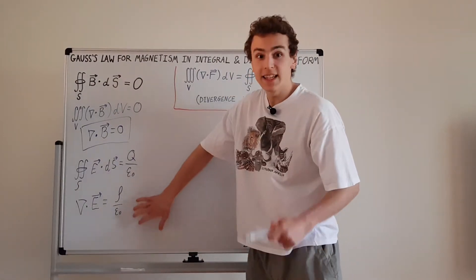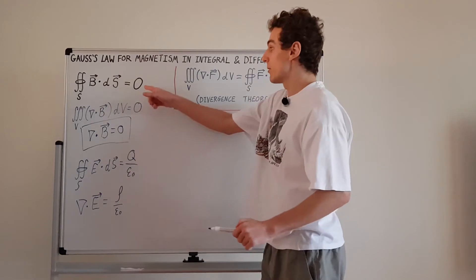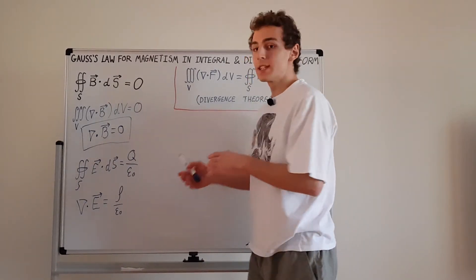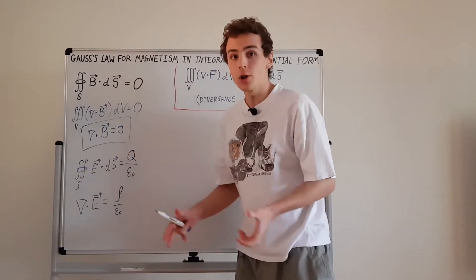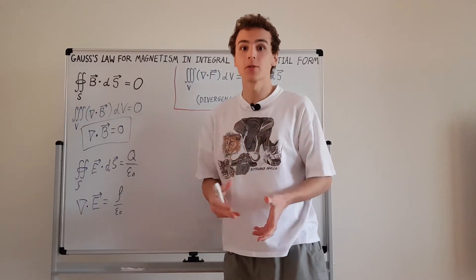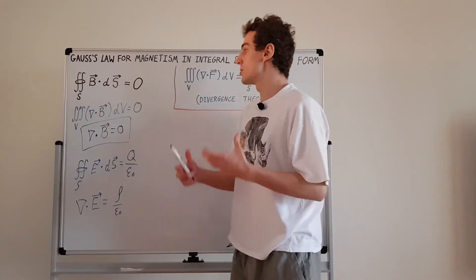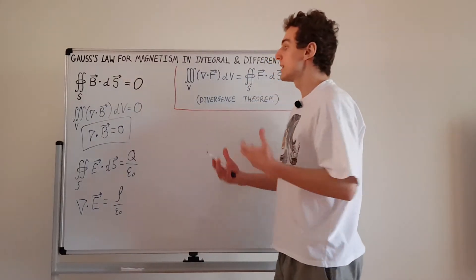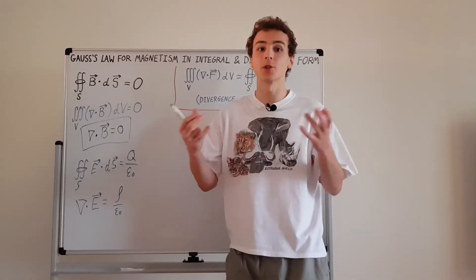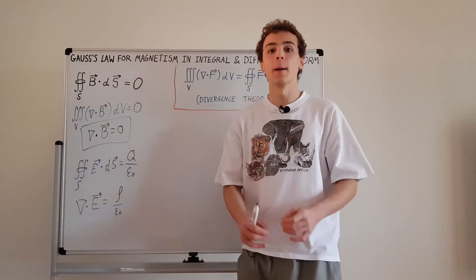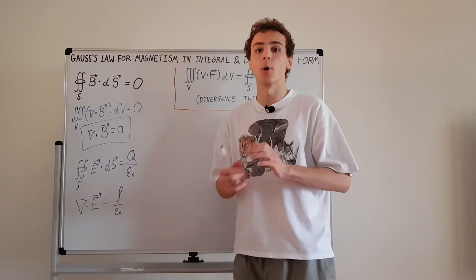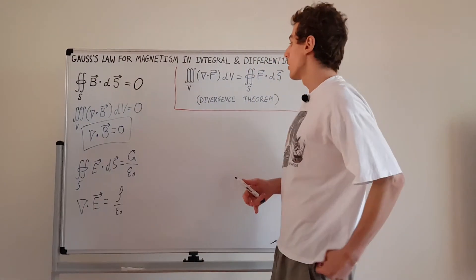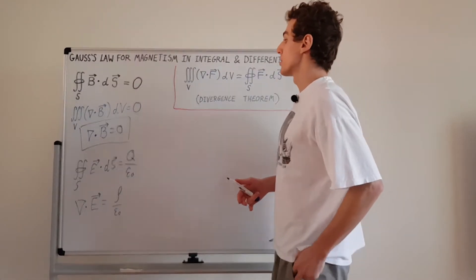For the magnetic field, the divergence is always equal to zero — not charge density over a constant. This is saying there are charges for electric fields, but there's no equivalent in magnetism. Magnetism doesn't have any sort of magnetic charge. In other words, there's no magnetic monopole. Let's draw a diagram to figure out what this is actually trying to say.